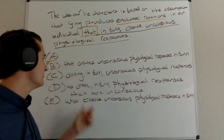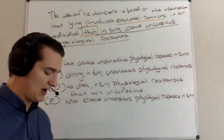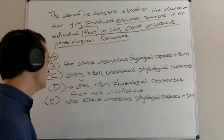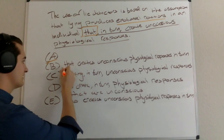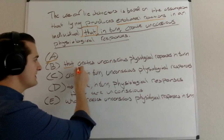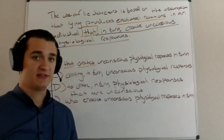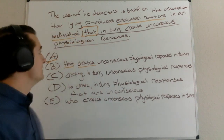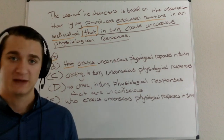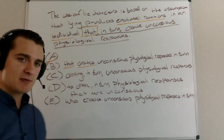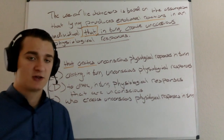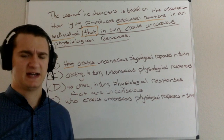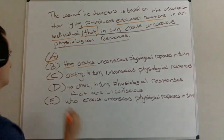Looking at B: 'that creates unconscious physiological responses in turn' — 'creates' is the singular form. So 'that' must modify something singular — an individual. 'An individual that creates unconscious physiological responses.' Here's the problem: if the individual is creating the physiological responses, then they're not unconscious anymore. I don't want to turn off my logical brain. An individual doesn't create unconscious physiological responses because if the individual creates those responses, then they are not unconscious. So I'll go ahead and eliminate B.